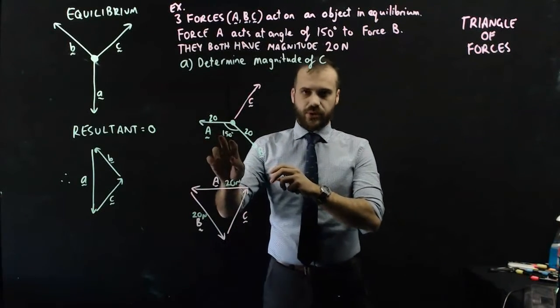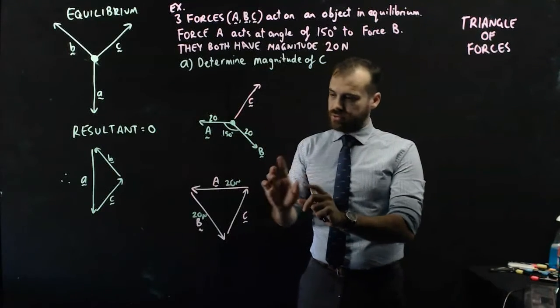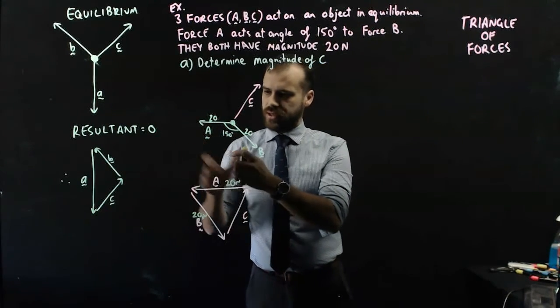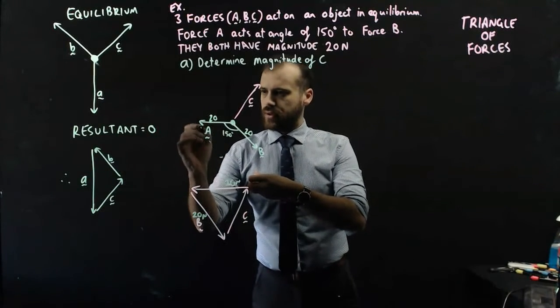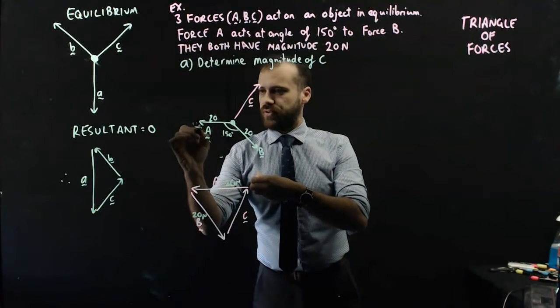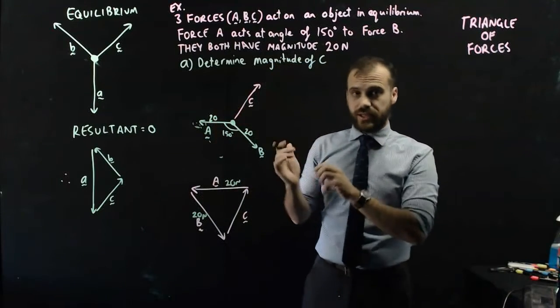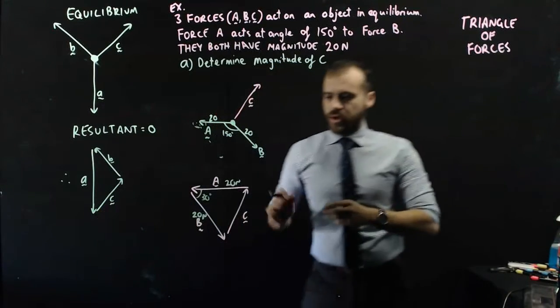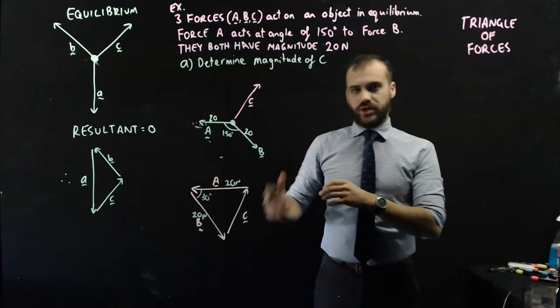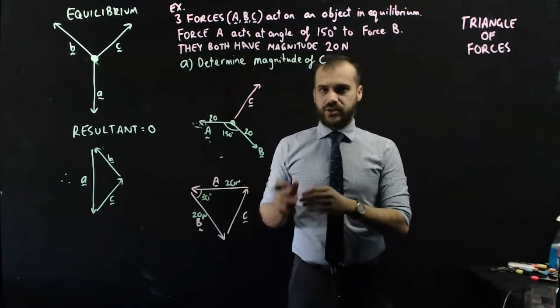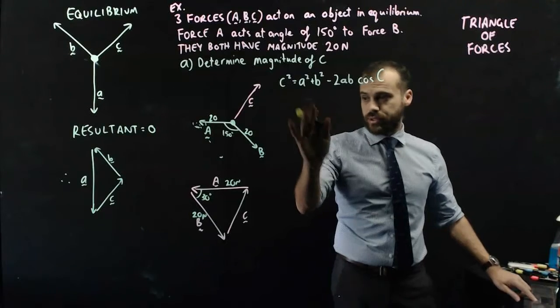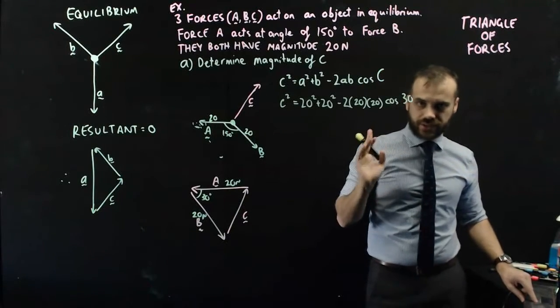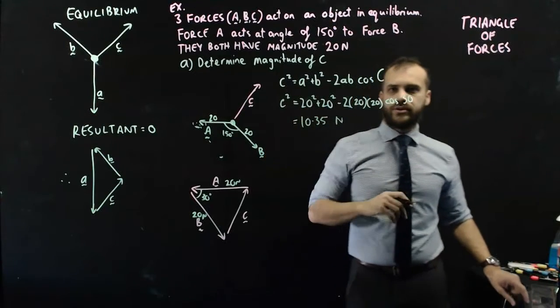I need to put in my angle somewhere. You need to be very careful. It's not 150, because I took B and I moved it from there to there. That angle's 150, but that angle is 30. Tip to tail, the angle is 30. From here, I should be able to use the cosine rule to find the magnitude of C. I'm just going to put in my values now. And I should just be able to type that into my calculator and get 10.35 newtons.